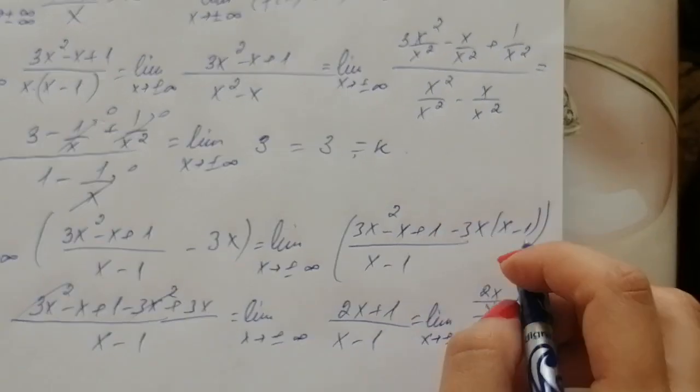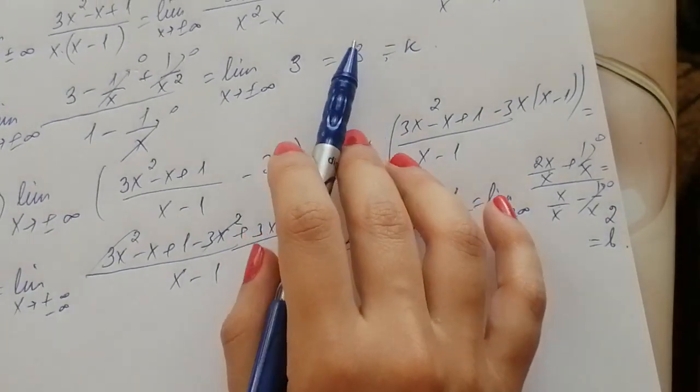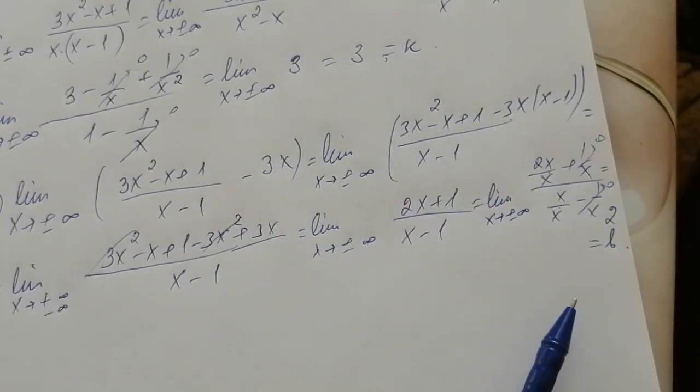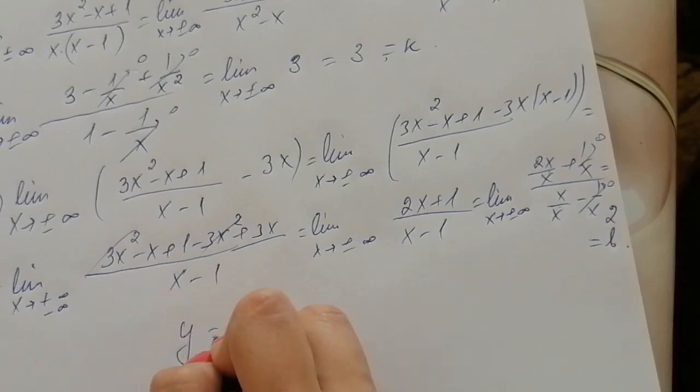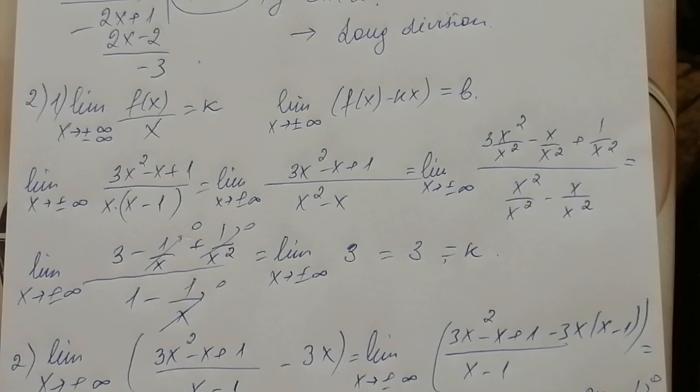2 over 1 is 2 and we found the value of b. Therefore we found the value of k and we found the value of b, therefore oblique asymptote is equal to 3x plus 2. So you see that it is the same as we found by long division.